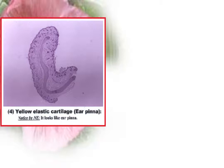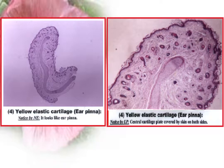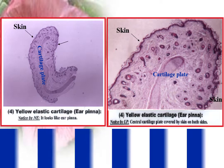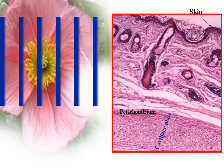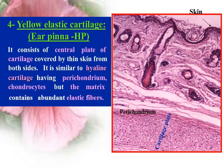Yellow elastic cartilage — an example being the ear pinna. It consists of a central plate of cartilage with abundant elastic fibers in the matrix, covered by thin skin from both sides. It is similar to hyaline cartilage, having a perichondrium — a fibrous connective tissue covering the cartilage plate from both sides. It contains chondrocytes, but the matrix contains abundant elastic fibers.